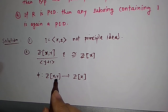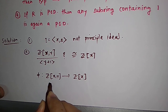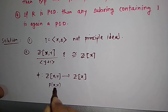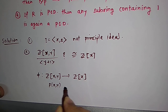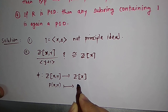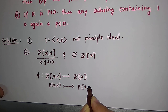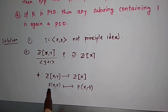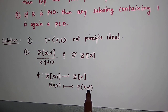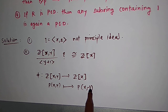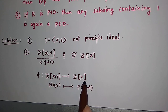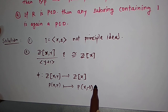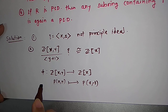There is a natural homomorphism where we evaluate at the y variable. So we map a polynomial P(x,y) to P(x, −1) — that is, we evaluate the two-variable polynomial by substituting y = −1. You can check that this is indeed a homomorphism. Now let us verify why it is surjective.